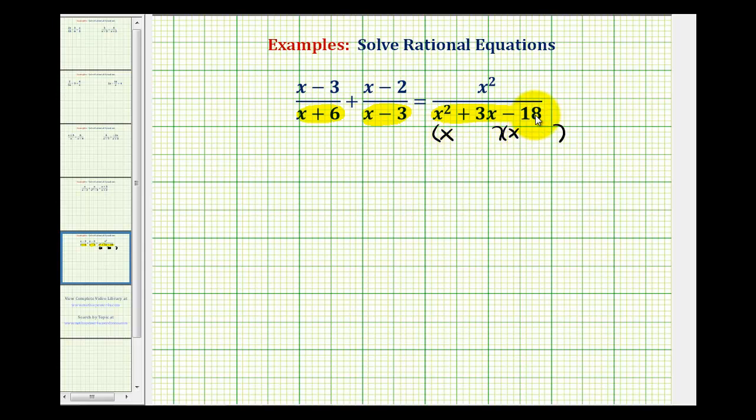The factors of negative 18 that add to three are positive six and negative three. This is actually good news because notice how these two factors do occur in the other two denominators.